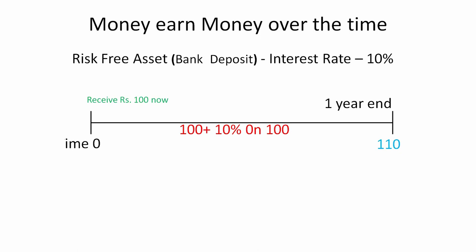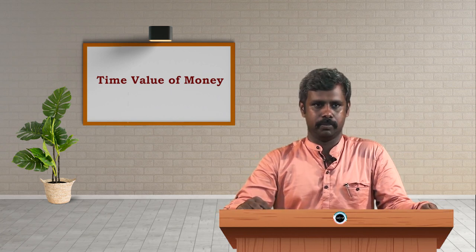For example, if you are receiving 100 rupees today, it is of more value than receiving 100 rupees one year later, because we can invest that 100 rupees in the bank at the rate of 10 percent. At the end of the year, we are going to end up with 110 rupees. Whereas if we receive 100 rupees one year later from today, we are going to end up with only 100 rupees, compared to 110 rupees in the previous case.